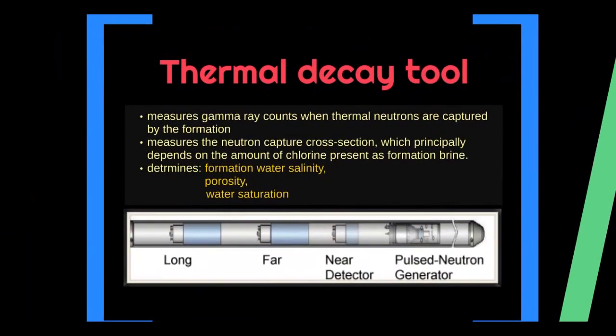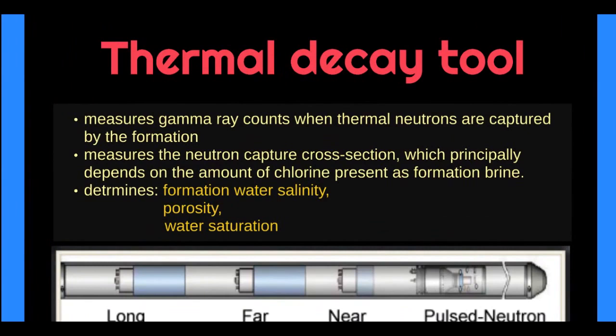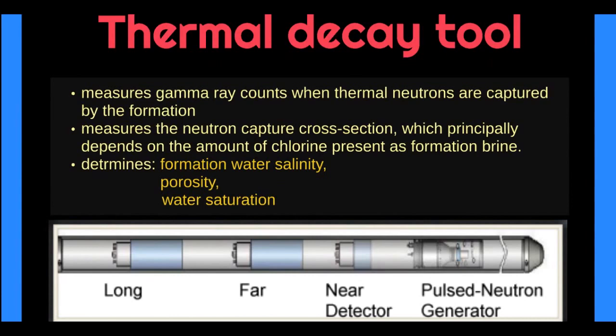Thermal decay tool: Thermal decay log is known by various names in the oil and gas service, such as thermal decay time or neutron lifetime. Thermal decay tool measures gamma ray counts when thermal neutrons are captured by the formation. Measures the neutron capture cross-section, which principally depends on the amount of chlorine present as formation brine. It determines formation water salinity, porosity, and water saturation. The neutron generator produces high-speed thermal neutron pulses in the borehole as well as formation regions. The electronic circuit on the pulsed neutron decay logging tool then records the detection times relative to a time reference related to the neutron production bursts.